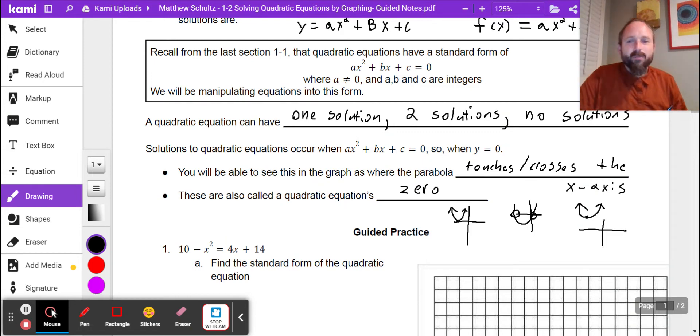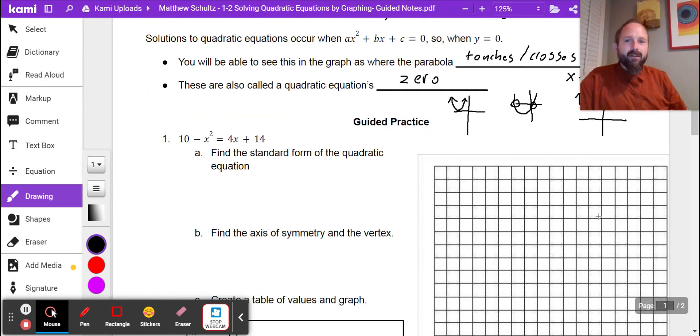So it says find the standard form of this quadratic equation. First thing we have to do is rewrite it. I'm going to move this negative x squared to the other side. The opposite of minus is plus. So I'm going to write plus x squared on both sides. And so I'm going to get x squared plus 4x plus 14 equals 10.